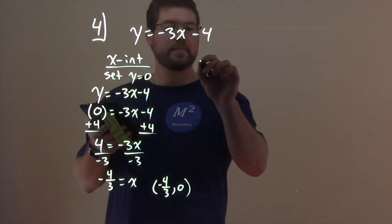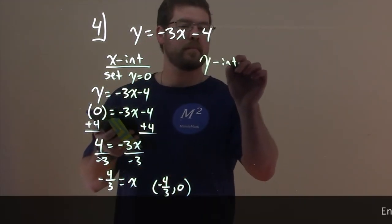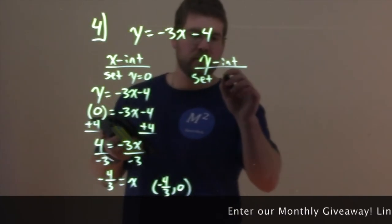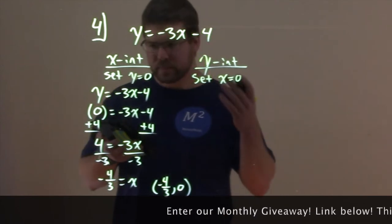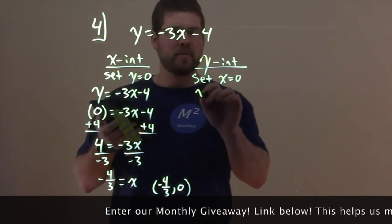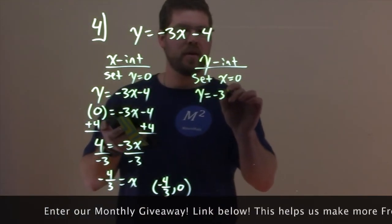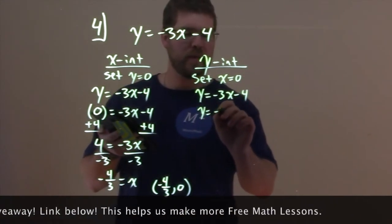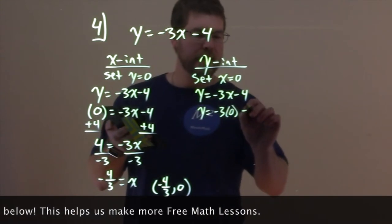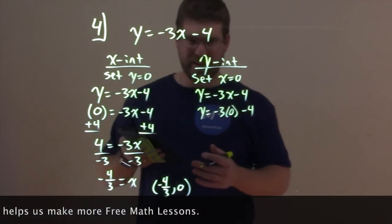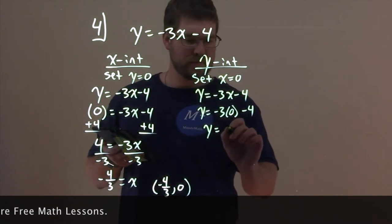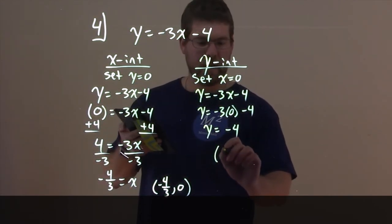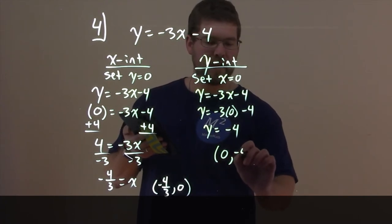So, let's go find the y-intercept. Again, set here, now instead of y equal to zero, x to zero. x equals zero. And we write our equation, y equals negative 3x minus 4. Plug zero in for x. So, y equals negative 3 times zero minus 4. Well, zero times anything is zero. So, we have y equals negative 4. So, the coordinate point here would be x value of zero, y value negative 4.